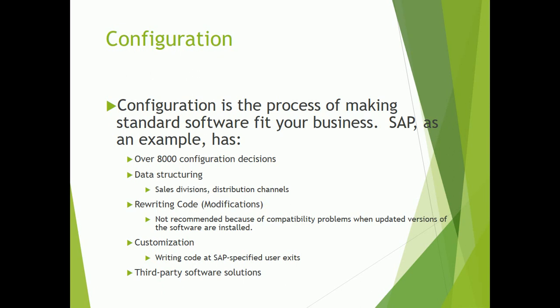When a company decides to buy an SAP system, they need to configure and install it as per their requirements — which modules they are buying and how many employees they have. Based on the number of employees, you decide which SAP edition to buy: Enterprise Edition, Business One, or another. Third-party companies handle configuration, making code modifications and customizations to fit the business requirements.